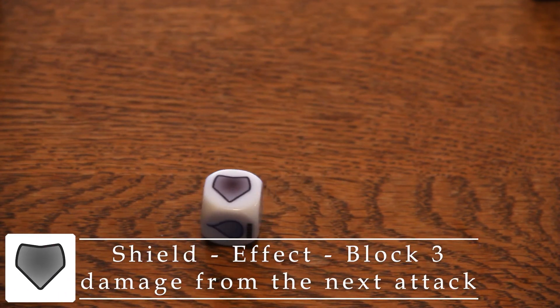Shield. Set this die forward to represent the active shield effect. On the next attack you receive, block up to 3 damage. The shield and all other active effects only last 1 round, then go away, regardless of being used or not.